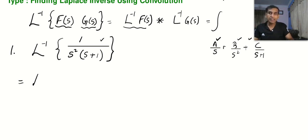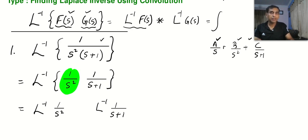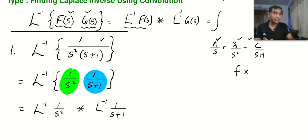I am going to write this as the Laplace inverse of 1/s² multiplied by 1/(s+1), because the convolution theorem can be applied only if you have a product of two functions. According to the convolution theorem, I take the Laplace inverse separately, and put the convolution symbol in between. One good news: convolution of f star g is the same as convolution of g star f — both give the same result.